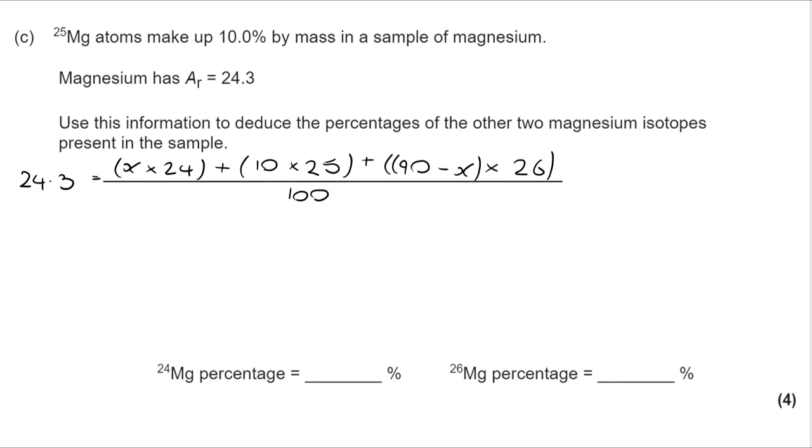then my percentage of magnesium 26 is 90, that's taking into account the 10% of magnesium 25, take away X and that's multiplied by 26.